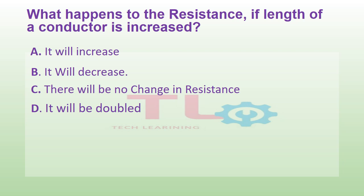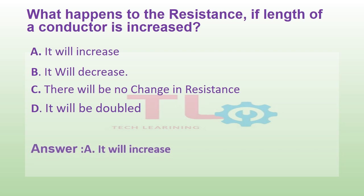What happens to the resistance if the length of a conductor is increased? Option A: it will increase. Option B: it will decrease. Option C: there will be no change in resistance. Or option D: it will be doubled. And the answer is option A, it will increase.